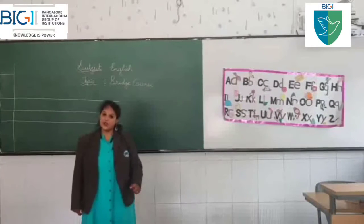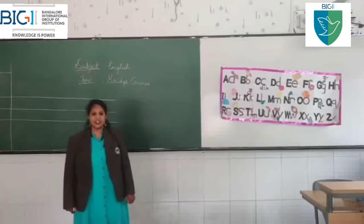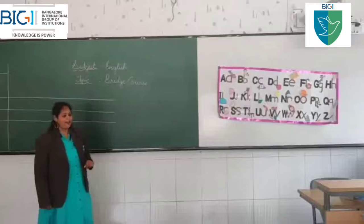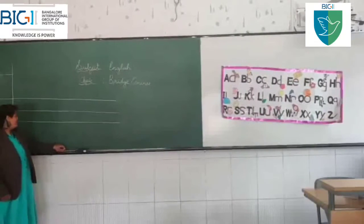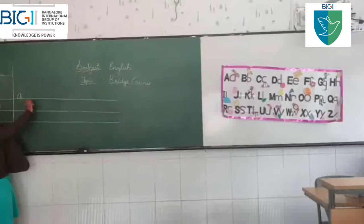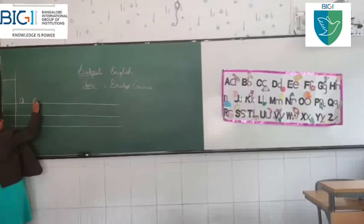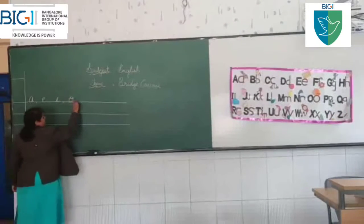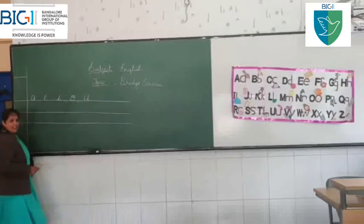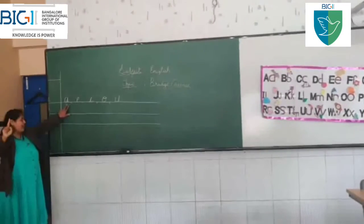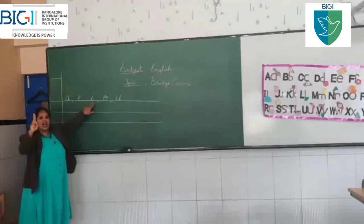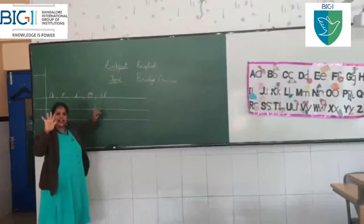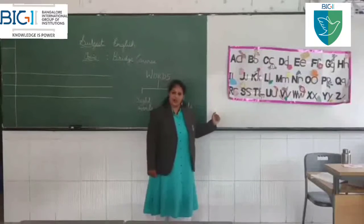There are 26 letters in English. We have 5 special letters called vowels. They are A, E, I, O, U. A is 1, E is 2, I is 3, O is 4, and U is 5. The rest of the letters are called consonants.